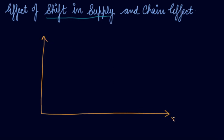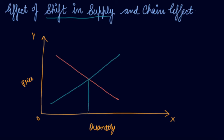Let's see what happens when there is a shift in supply. This is your quantity, this is your price. You are at equilibrium when your demand is equal to your supply. This is the price, this is the quantity, and this is the equilibrium point. This is the supply curve and this is your demand curve. Now let's see the effect of shift in supply.